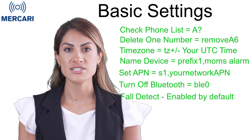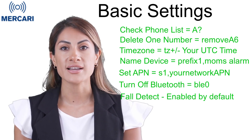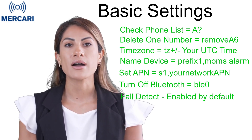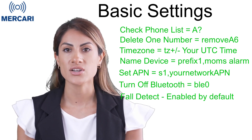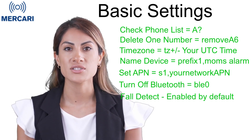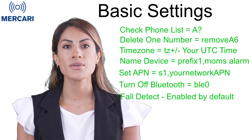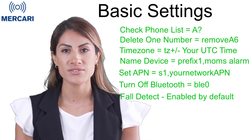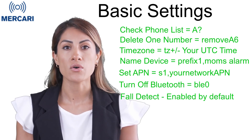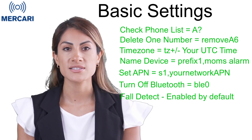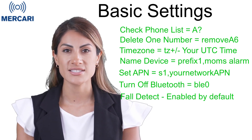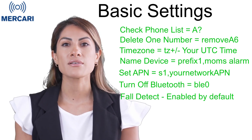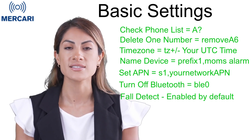To give the device a name that will display on your contact's SMS messages — let's say you wanted to call it 'Mom's Alarm' — you would send it the SNS code, prefix 1, Mom's Alarm. You can have gaps in the device name. For panic alarm use in a fixed location such as a store or shop, we would suggest using the device's physical location as its name so emergency responders can quickly obtain an address if they have access to SMS.